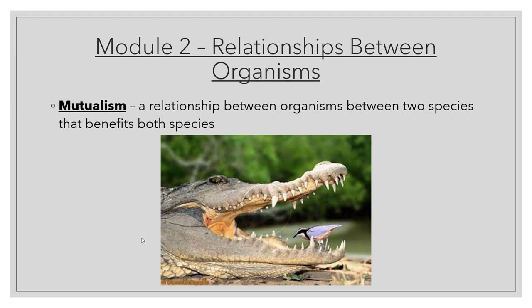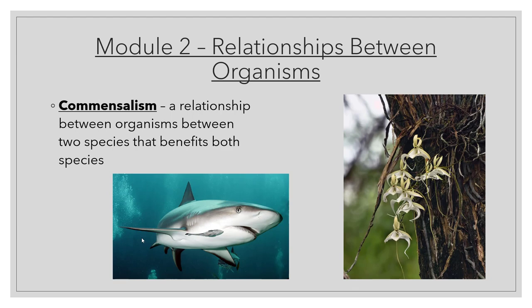Mutualism is where both organisms benefit. Here you see a Nile crocodile and an Egyptian plover — a kind of bird. The Nile crocodile tolerates this bird in its mouth; the plover comes in and eats little bits of food stuck in the crocodile's teeth, and the crocodile gets basically a free dental exam — bits of rotting flesh are removed so it doesn't end up with an infection. Mutualism: they both benefit.